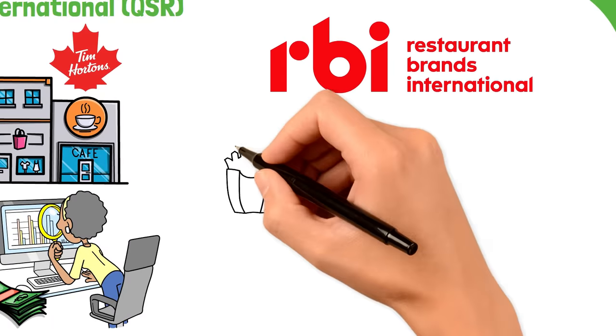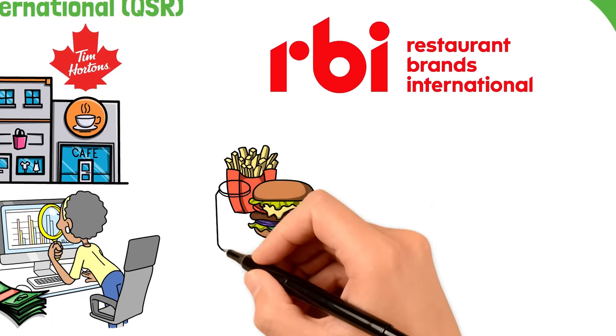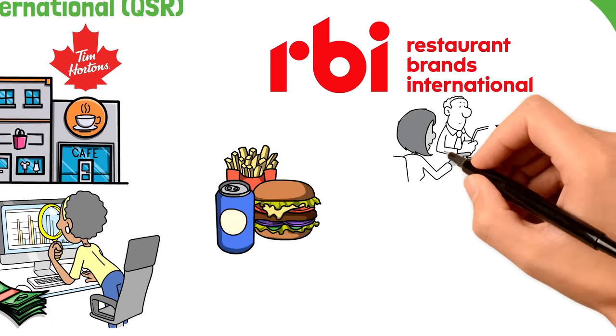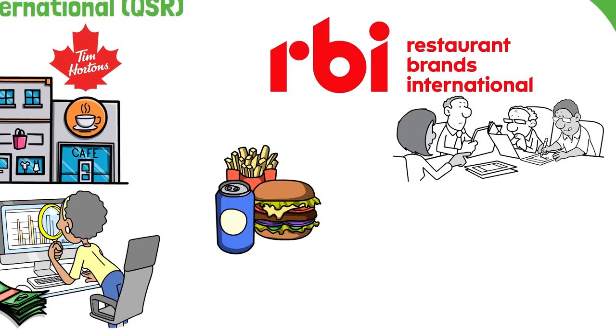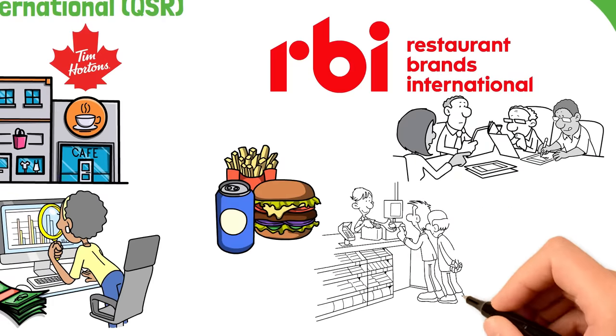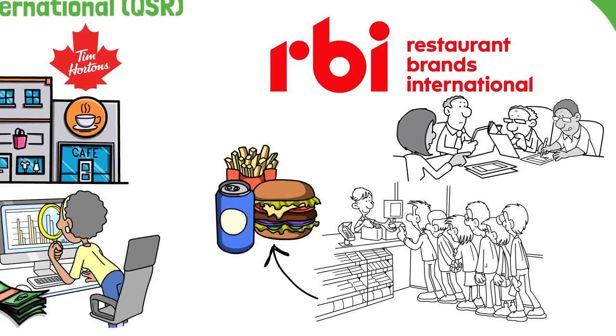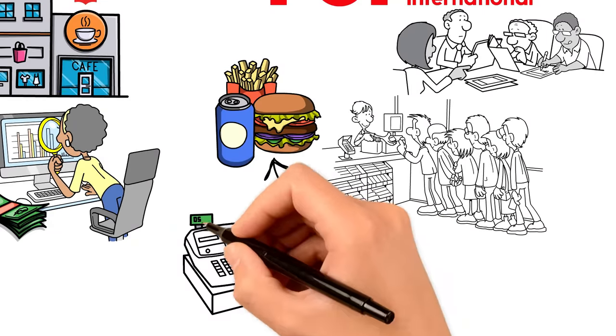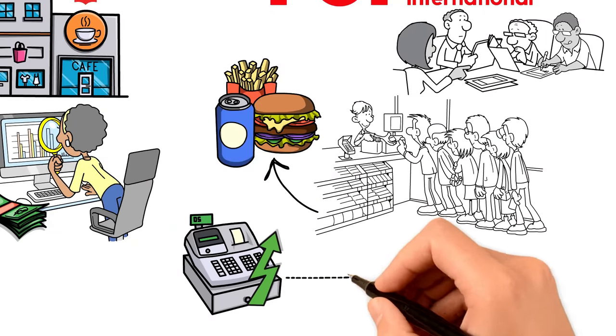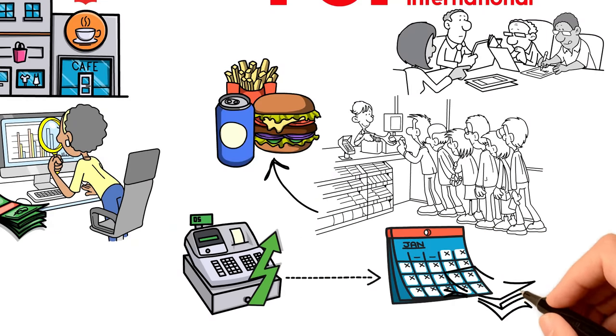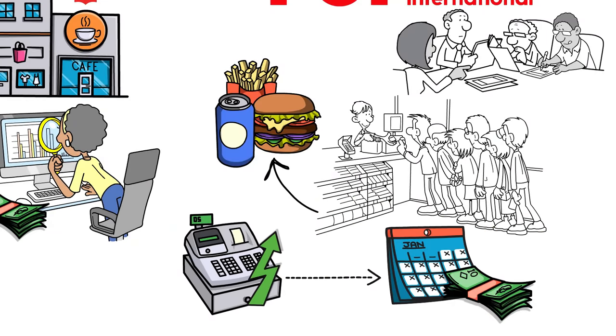QSR stands out because it's not just about flipping burgers or brewing coffee. It's about a proven business model that's been refined over the years. This company has mastered the art of serving up what people want, making it a daily habit for millions. That's a big deal, because those daily habits translate into steady sales. And steady sales means steady dividends for investors like us.